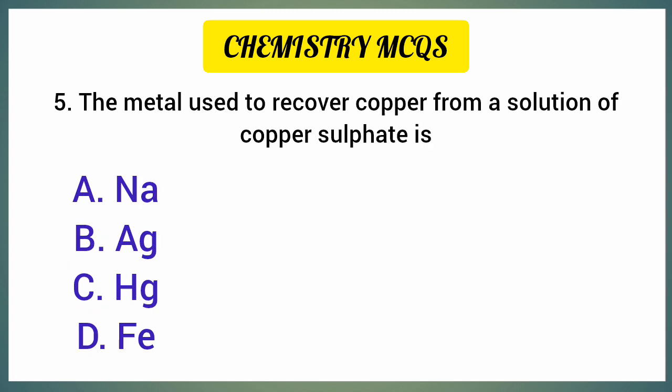The metal used to recover copper from a solution of copper sulphate is — correct option is option D: Iron.